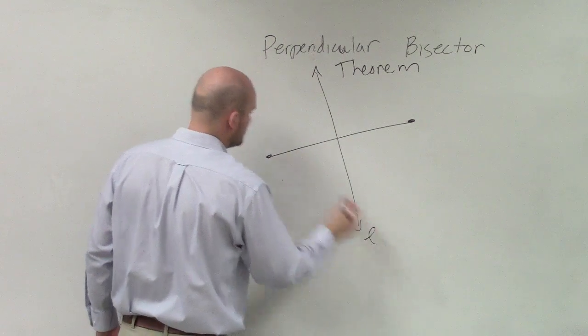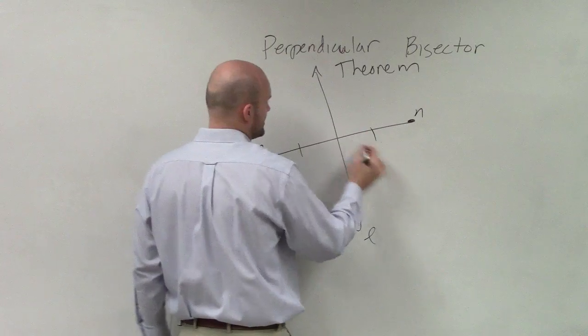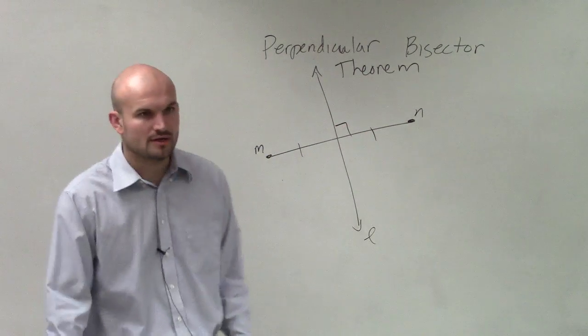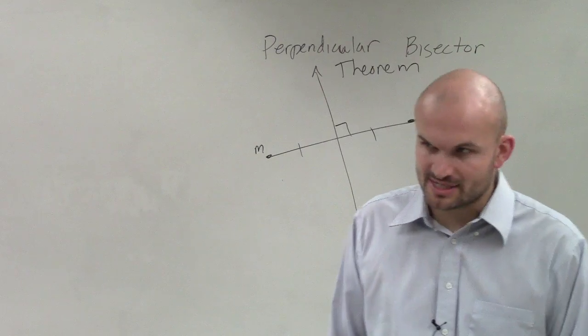So we have our line L, and we have M, and we have N. We know those are equal, and we know we've created a right angle. So that's a perpendicular bisector. L is the perpendicular bisector.